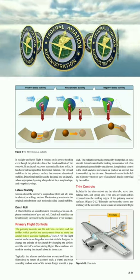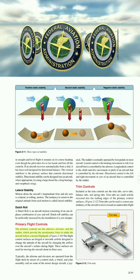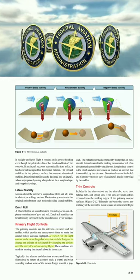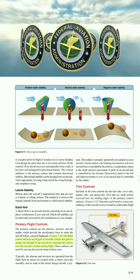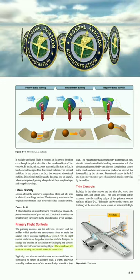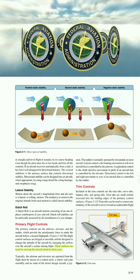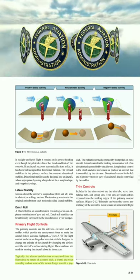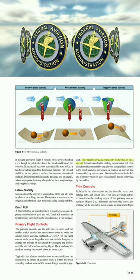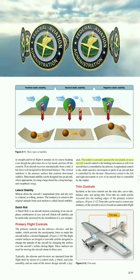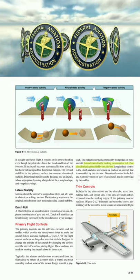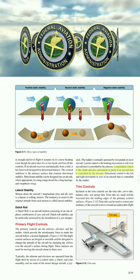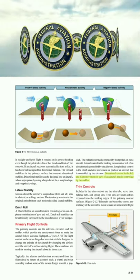Primary flight controls. The primary controls are the ailerons, elevator, and the rudder, which provide the aerodynamic force to make the aircraft follow a desired flight path. The flight control surfaces are hinged or movable airfoils designed to change the attitude of the aircraft by changing the airflow over the aircraft's surface during flight. Typically, the ailerons and elevators are operated from the flight deck by means of a control stick, a wheel and yoke assembly, or on some newer aircraft, a sidestick. The rudder is normally operated by foot pedals. Lateral control is the banking or roll of an aircraft, controlled by the ailerons. Longitudinal control is the climb-and-dive or pitch of an aircraft, controlled by the elevator. Directional control is the left-and-right or yaw of an aircraft, controlled by the rudder.